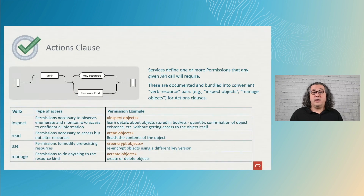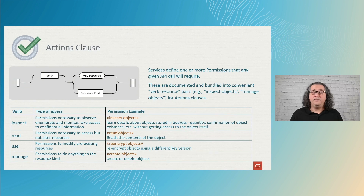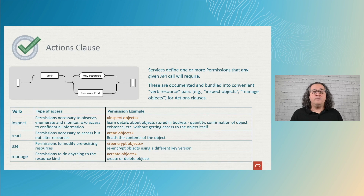Knowing the subject of your statement, let's move to the action clause. The action clause defines the type of access. From top to bottom, they increase the amount of power granted. The 'inspect' verb allows the user to list resources without showing confidential information — it's targeted at external auditors. The 'read' verb allows listing resources and seeing confidential information, intended for internal auditors. The 'use' verb is for normal users, granting the ability to use and sometimes modify resources. Lastly, the 'manage' verb grants all permissions. Action clauses are paired with objects.